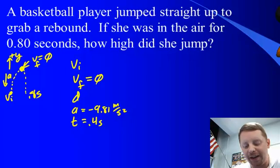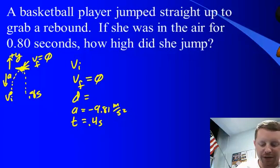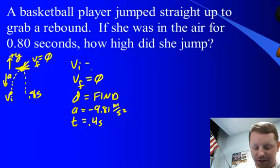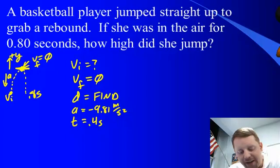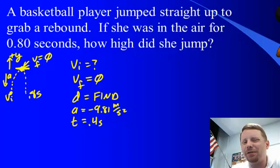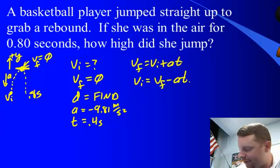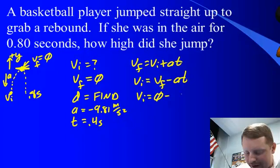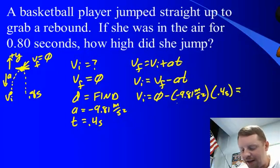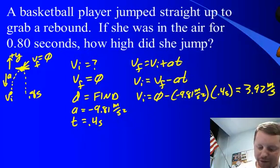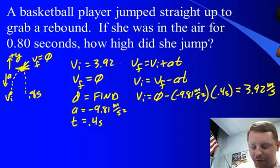We now know three things; we can find the other two. We're looking for her displacement — how high did she jump. There's no equation with just vf, d, a, and t, so we solve for vi first using vf equals vi plus a*t. Rearranging: vi equals vf minus a*t, or vi equals 0 minus negative 9.81 meters per second squared times 0.4 seconds. Negative times a negative gives a positive: vi equals 3.92 meters per second.